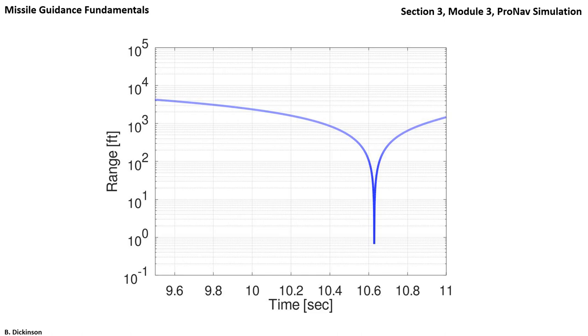This minimum value is the miss distance. Theoretically, for this true ProNav sim, miss distance should be zero. But because we're numerically integrating, we have integration error that causes finite miss in the simulation. That miss is about 8 inches in this instance.